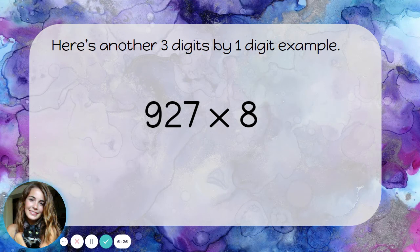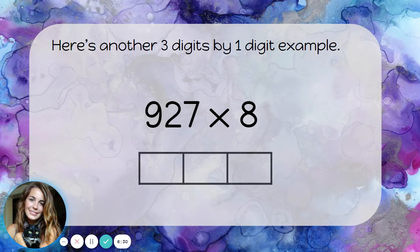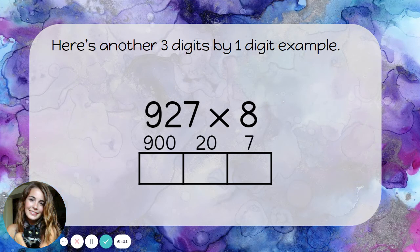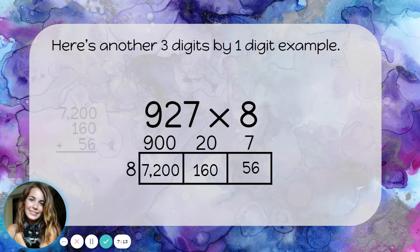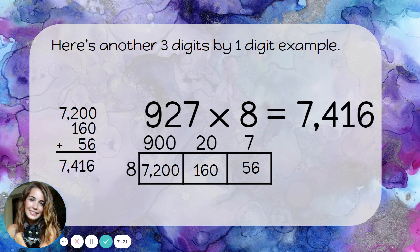Let's look at one more, this time a 3-digit example. Because I have 3 digits, I need a 3-by-1 array. I break apart my 3-digit number into 900, 20, and 7, and the 1-digit number 8 goes along the side. Now I multiply the pieces: 900 times 8 is 7,200 — I know that because 9 times 8 is 72, and I add two zeros for the two zeros in 900. In the middle box, 20 times 8 is 160, just like 2 times 8 with a zero on the end. In the final box, 7 times 8 is 56. Adding all the partial products together gives 7,416.